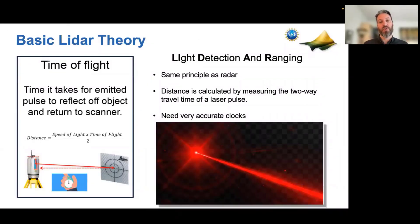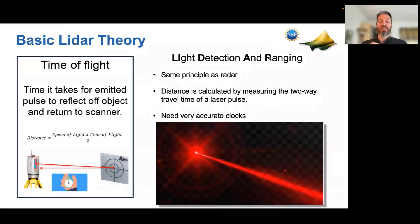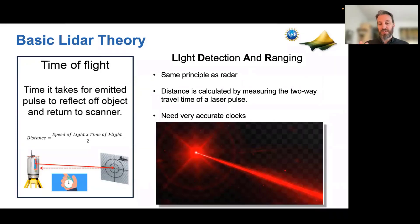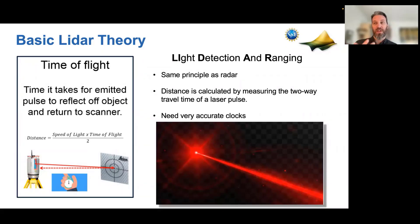LIDAR stands for Light Detection and Ranging. It operates on the same principles as radar. A pulse of light is emitted from your instrument, travels through space, hits a target, is returned, and then is detected by a sensor. Critical to this operation is very accurate clocks. When that laser pulse is emitted, it is time-tagged, and when it is returned, it is time-tagged. Knowing that light travels at the speed of light, you multiply that by your time of flight, divide by two, and you get your distance.